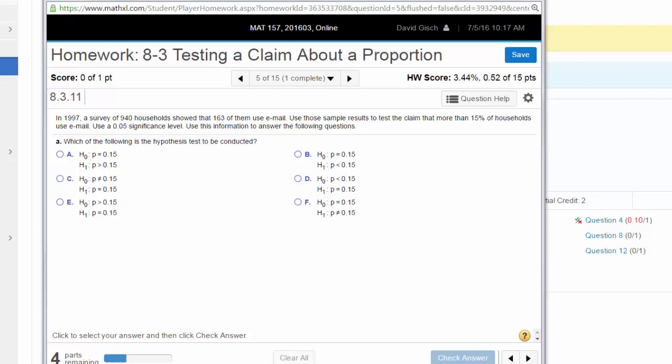Okay, I want to do a video about testing a claim about a proportion. I'm just taking a sample question from online. Let's run through all the parts and check it out. If we read this real quick, in 1997, a survey of 940 households showed that 163 of them use email. Use those sample results to test the claim that more than 15% of households use email. Use a 0.05 significance level.